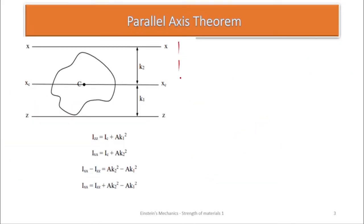Let's look at this shape again and get more meaning from it. This is an irregular shape again, and from experiment we found the centroidal axis — let's call it XC, the center X axis. There are two other reference axes parallel to this centroidal axis. The key point is that one of the two axes in the parallel axis theorem must always be the centroidal axis — so it cannot be between two non-centroidal axes.